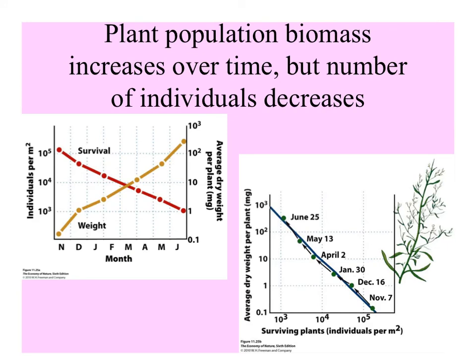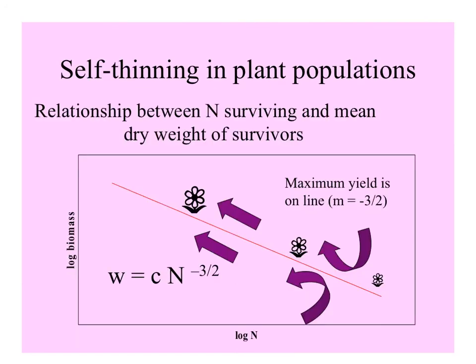An interesting phenomenon in plant populations is self-thinning: as plants grow bigger, fewer plants survive but the survivors get bigger — probably because some larger plants outcompete and kill the smaller ones. Looking at a time series from November through winter into spring and summer, there are initially many small individual plants at around 10 to the 5th power, but then fewer and fewer survive while the remaining ones get bigger and bigger.